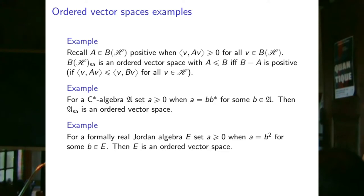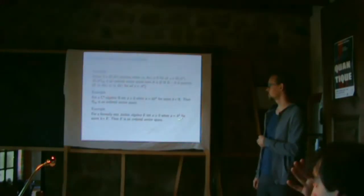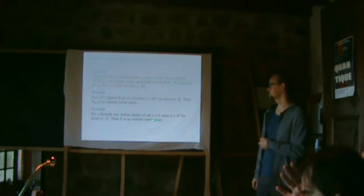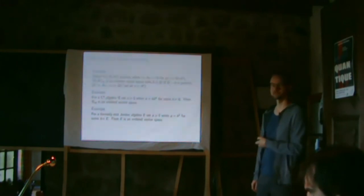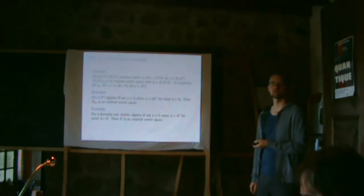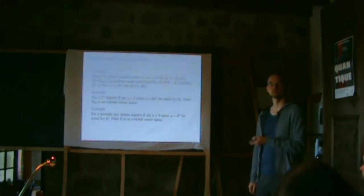For a formally real Jordan algebra, an element is positive if it's a square. It's not super obvious why these form ordered vector spaces — you need quite a bit of math — but it is true.